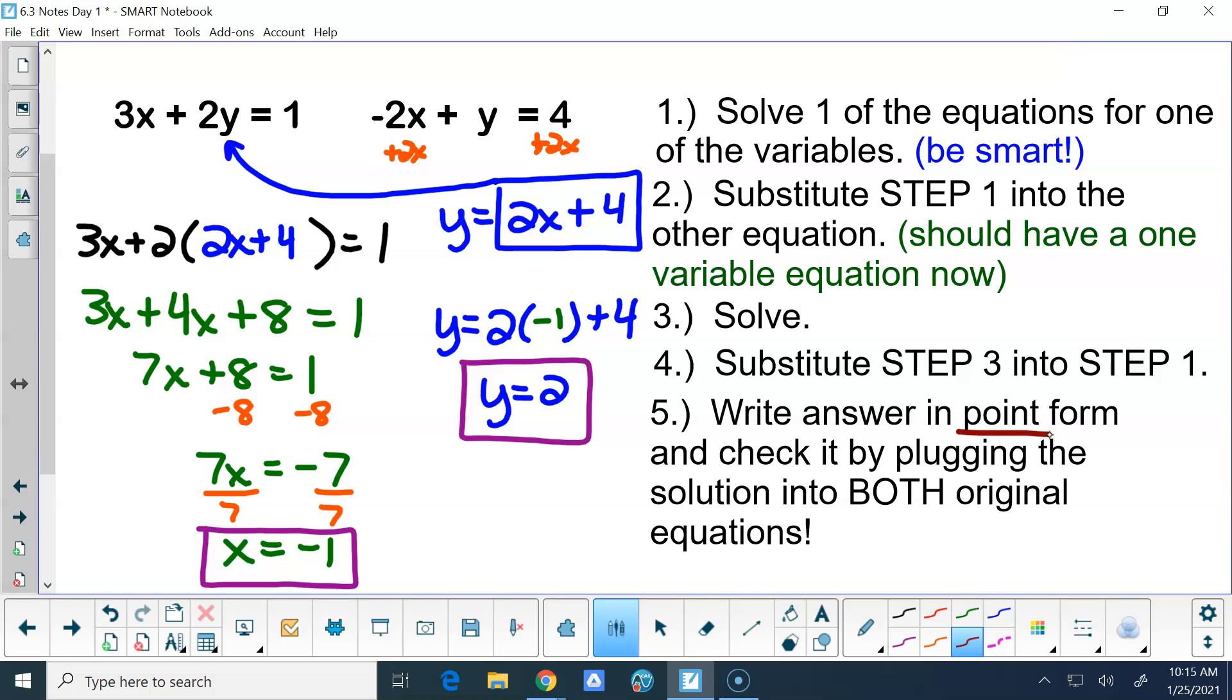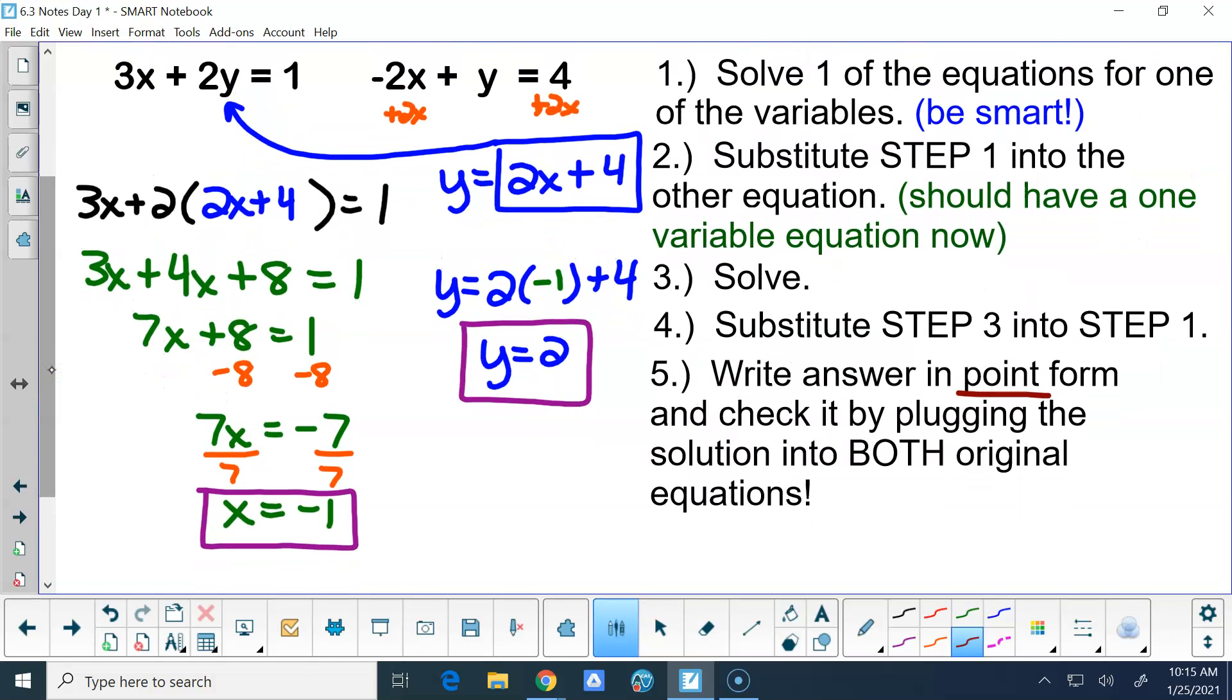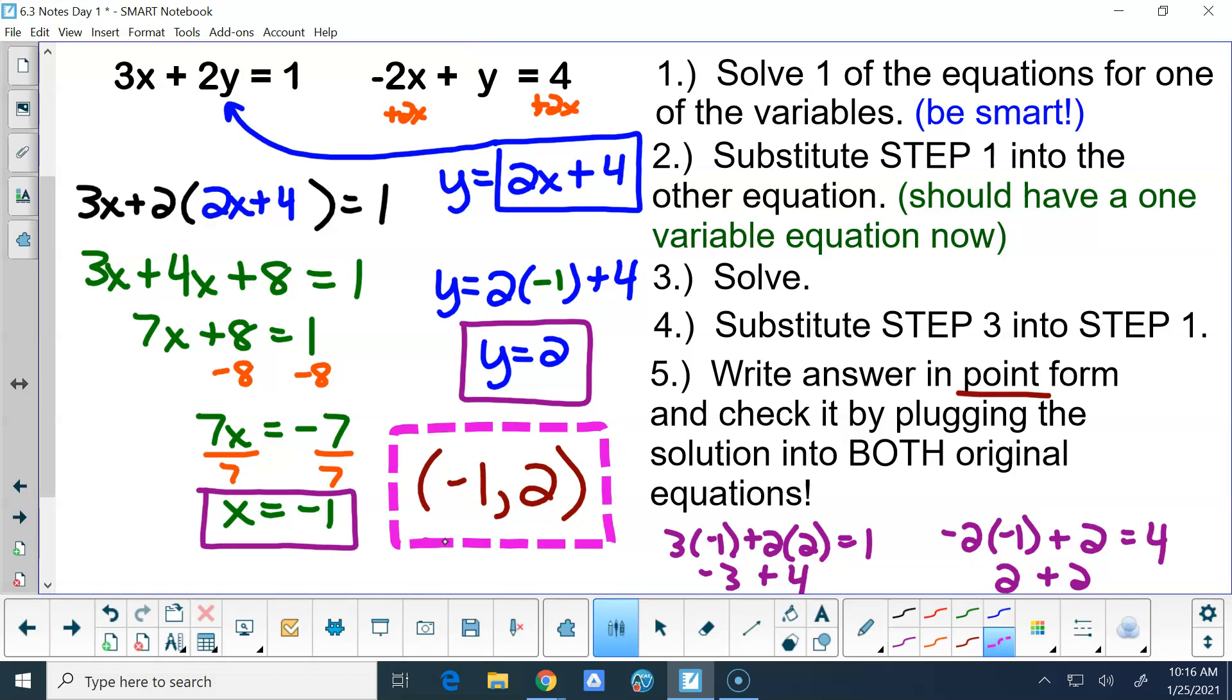So we have to write it in x comma y form. And we should check it so that we know if we're right. So let's check it first before we write it. So 3 times negative 1 plus 2 times 2 has to be 1. And negative 2 times negative 1 plus 2 has to be 4. 3 times negative 1 is negative 3. 2 times 2 is 4. Negative 3 plus 4 is 1. Check. So my answer here is in point form x comma y or in alphabetical order if we're not dealing with x's and y's. So my answer there would be the point negative 1 comma 2.